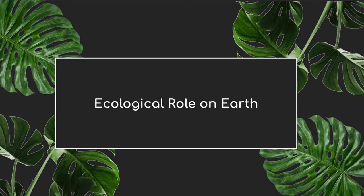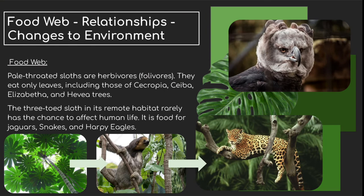Next, we're going to be talking about ecological role on Earth — the food web, relationship with animals, and changes to the environment. Every animal lives in a food web, and without them, the whole food web would crash. The pale-throated sloths are actually herbivores. They eat many different types of leaves found in the rainforest, such as the cecropia, ceiba, elizabeth, and hevea trees. The three-toed sloth in its remote habitat rarely has the chance to affect human life, but it is food for jaguars, snakes, and harpy eagles. The food web goes from leaves to the sloth, and then the jaguar or eagle eats the sloth. Jaguars are the biggest threat.